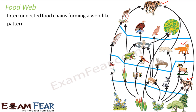For example, here you have plants eaten up by insects, the insects eaten up by birds, and the bird eaten up by a snake — this is one food chain. At the same time, there can be another food chain where the frog is also eaten up by the snake. So the snake becomes part of both food chains. Since animals have a variety of eating habits, the food chains get interconnected, and these interconnected food chains form the food web.